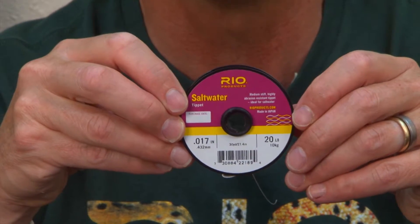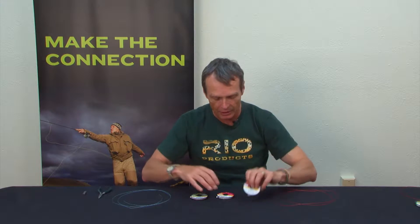this is 20-pound saltwater material, you can put it onto your leaders or anything like that. So really it's a join for contrasting sizes. Very neat, very easy to do, and strong.